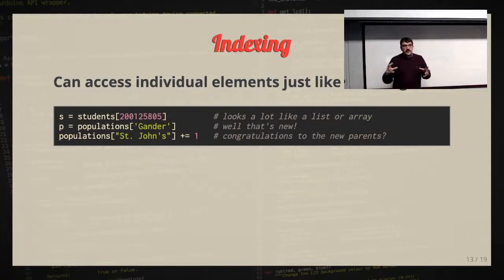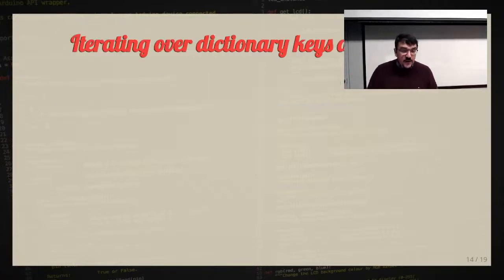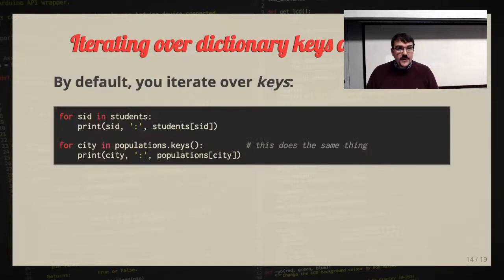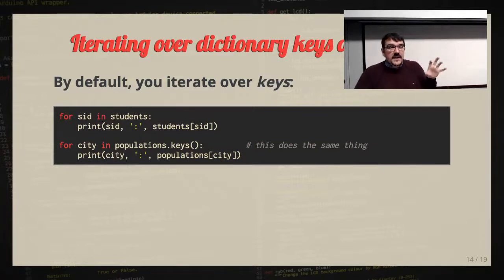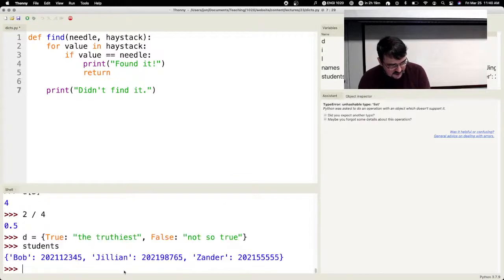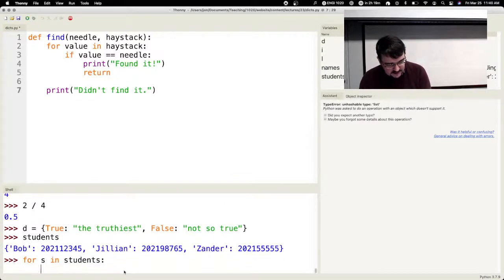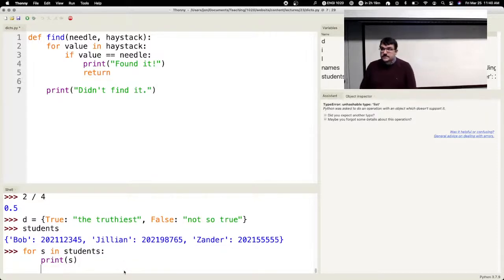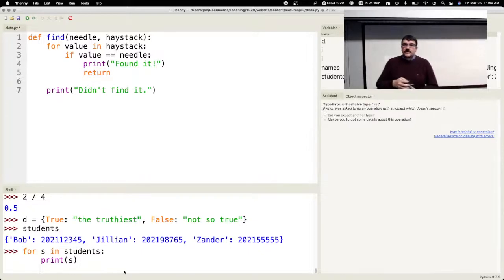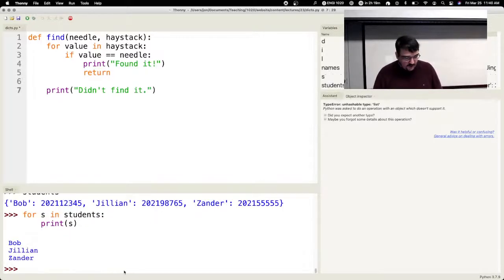By default, when you iterate over a dictionary, you get the keys. So if I say 'for s in students, print s', given our students dictionary where names are keys and student IDs are values, this will print the students' names — the keys. We can also iterate over the values by calling the values method, and iterate over the keys explicitly using the keys method.